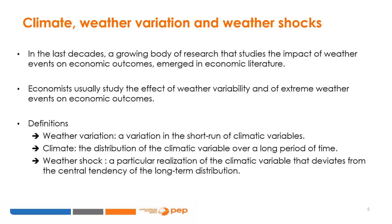This does not mean that slow-onset events have no impact on child well-being. In epidemiological and environmental sciences, there is some evidence on the effects of slow-onset climate events on child health and household income. For instance, it has been proven by Khan and co-authors, 2011, that in Bangladesh, rising sea levels lead to an addition of salt water into drinking water, increasing the risk of hypertensive disorders during pregnancy, a leading cause of perinatal death in low-income countries.